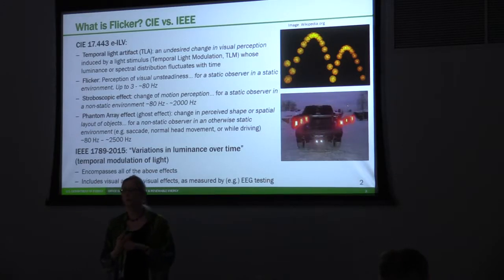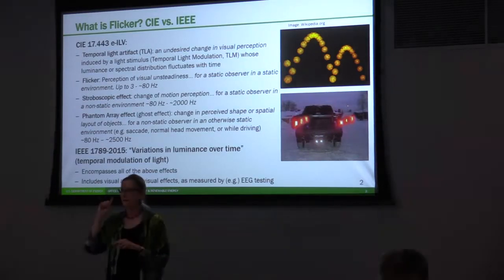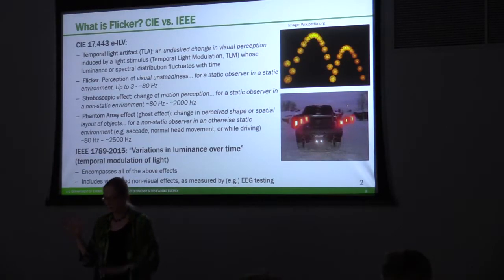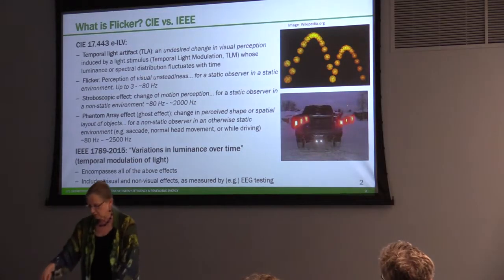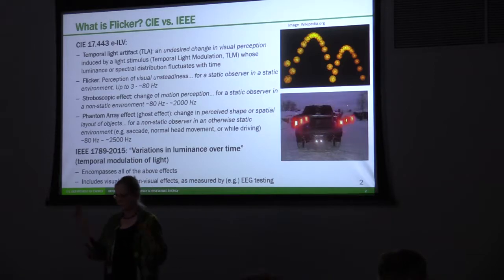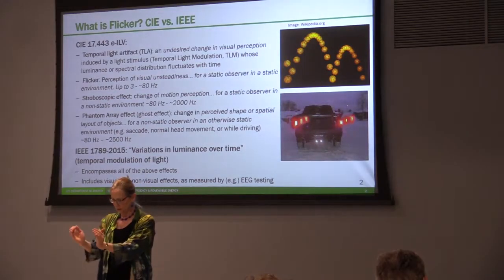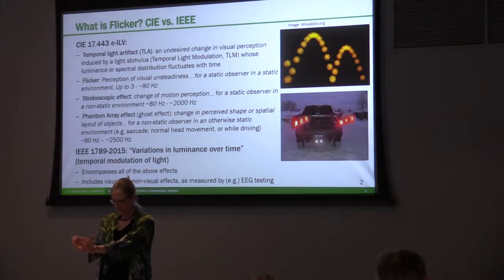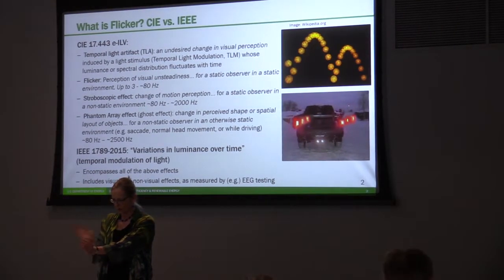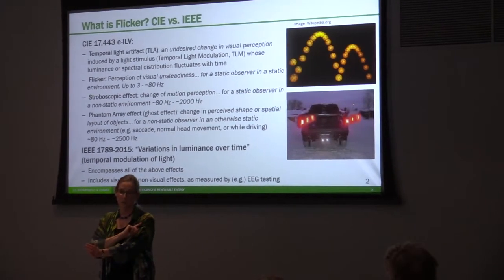They also define three flavors of flicker. The first one is called flicker: the perception of visual unsteadiness for a static observer in a static environment. So if you're standing still, your eyes are not moving, you're focused at a light source, your eyes never go through any major saccades, and you're seeing something unsteady — that's flicker.